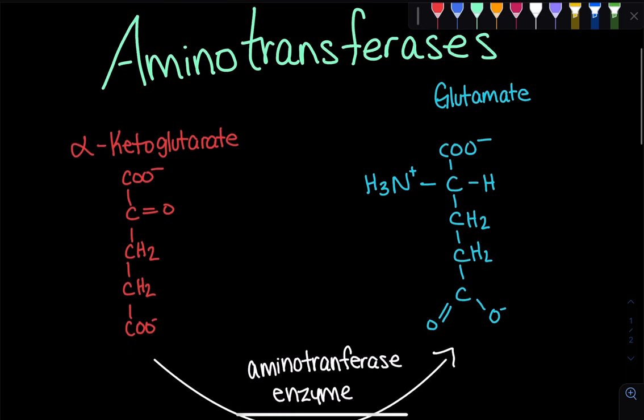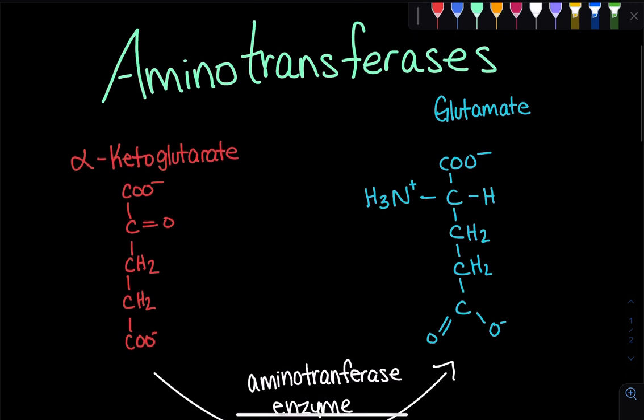So what's the importance of these aminotransferases? Well, this is just one example of where it's being used. This is the most common example. And this process specifically, forming glutamate, often occurs only in the liver. But we also see aminotransferases, for example, in the muscle cells.